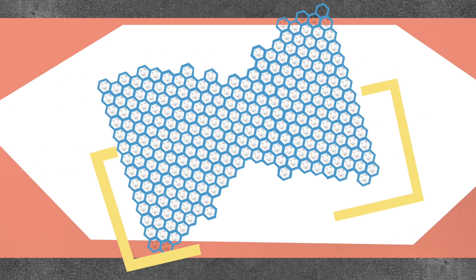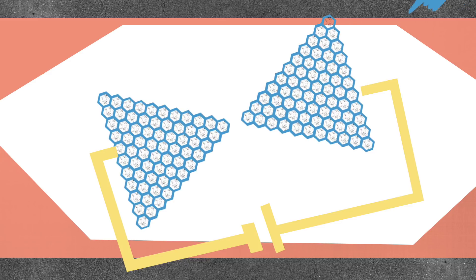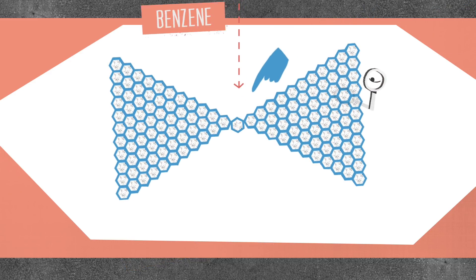They use electrical pulses to break the graphene, creating a gap just big enough for a single molecule such as benzene, which has a ring-like structure.